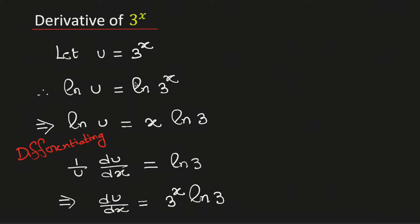Therefore, as u is equal to 3 to the x, the derivative of 3 to the x will be equal to 3 to the x times ln 3. And this is our final answer.